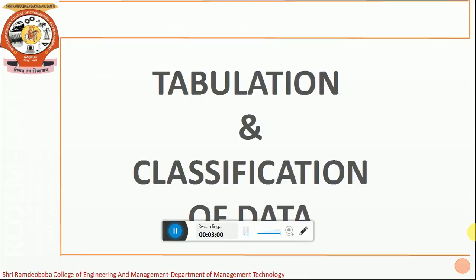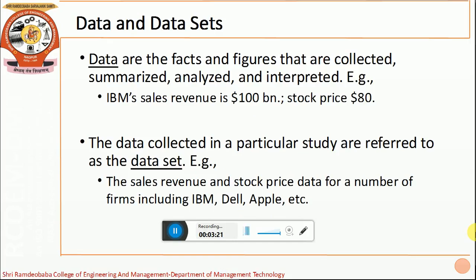Let us start with the primary requirement for categorizing data and systematic classified and tabulated data. We need to understand some basic terminologies used in tabulation and classification of data. The first is data. Data are the facts and figures that are collected, summarized, analyzed and interpreted. For example, the stock price of IBM is $80 and the sales revenue of IBM is $100 billion. These individual datum are collectively called as data.